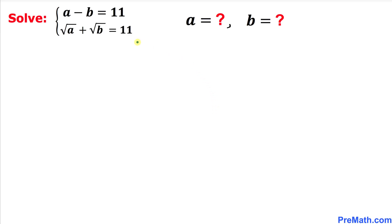Welcome to pre-math. In this video we are going to solve this given system of equations: a minus b equals 11, and square root of a plus square root of b equals 11 as well. In other words, we are going to find the value of a and b.